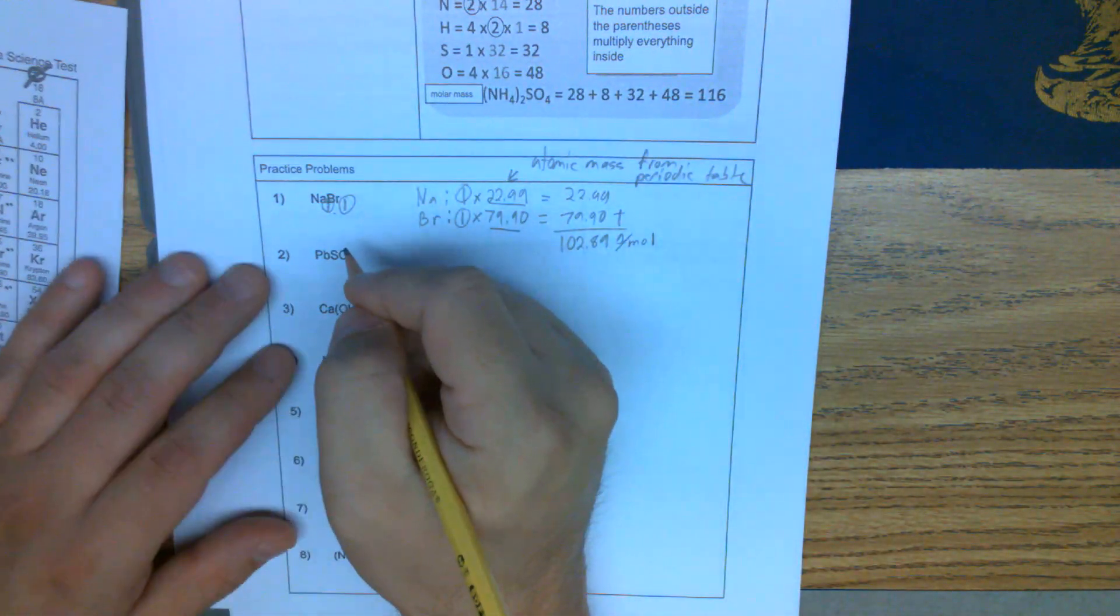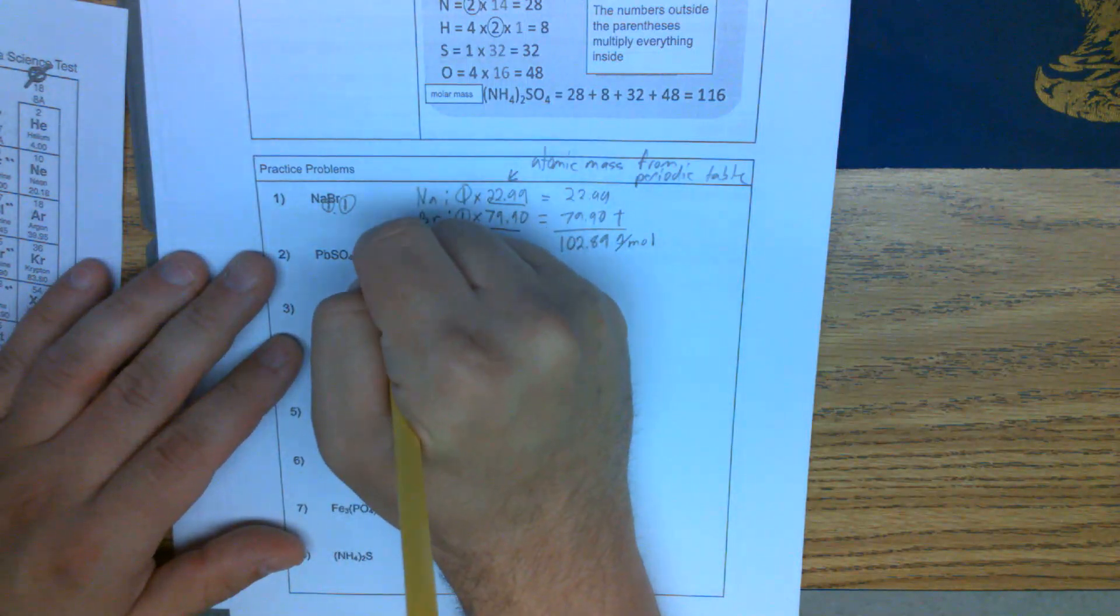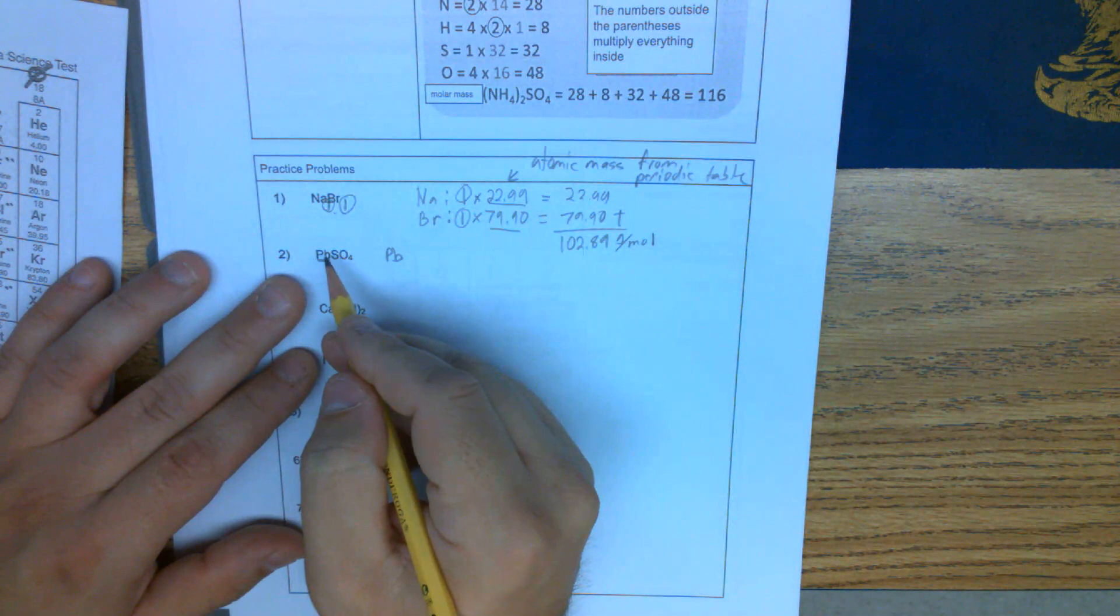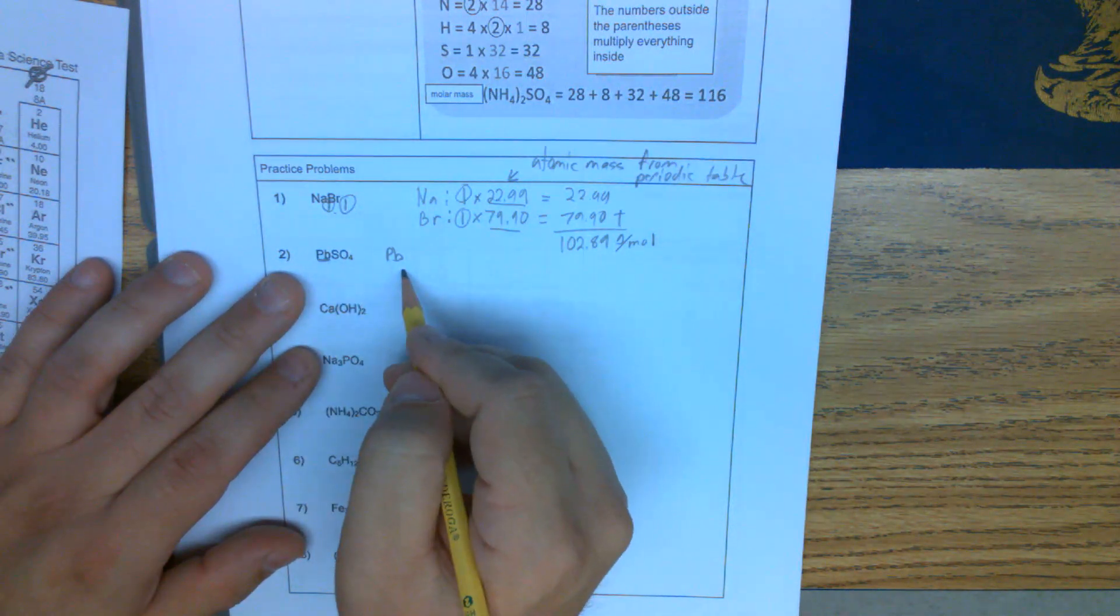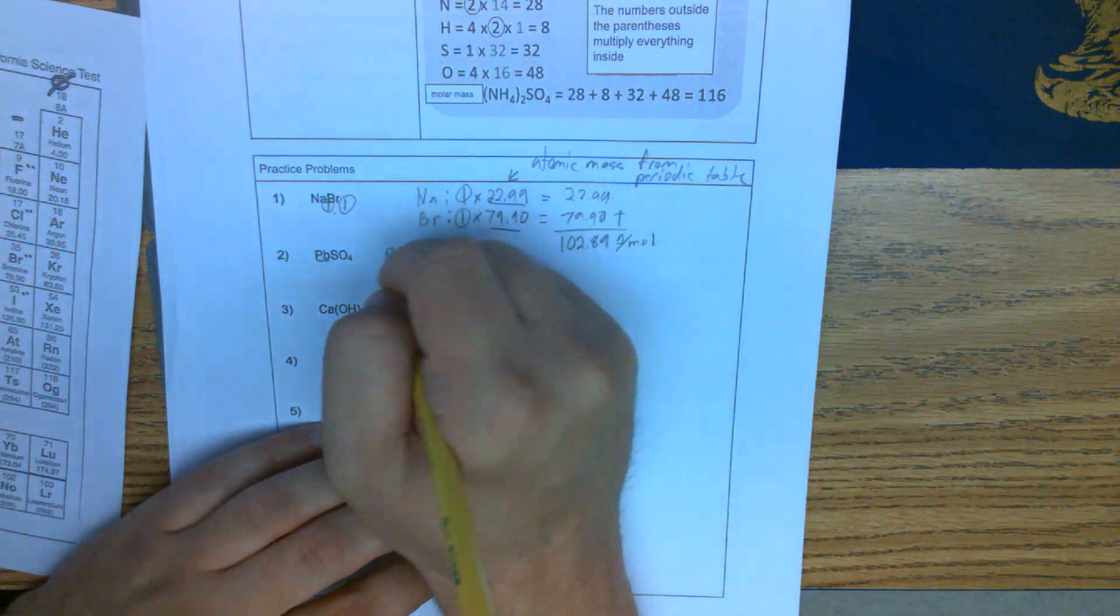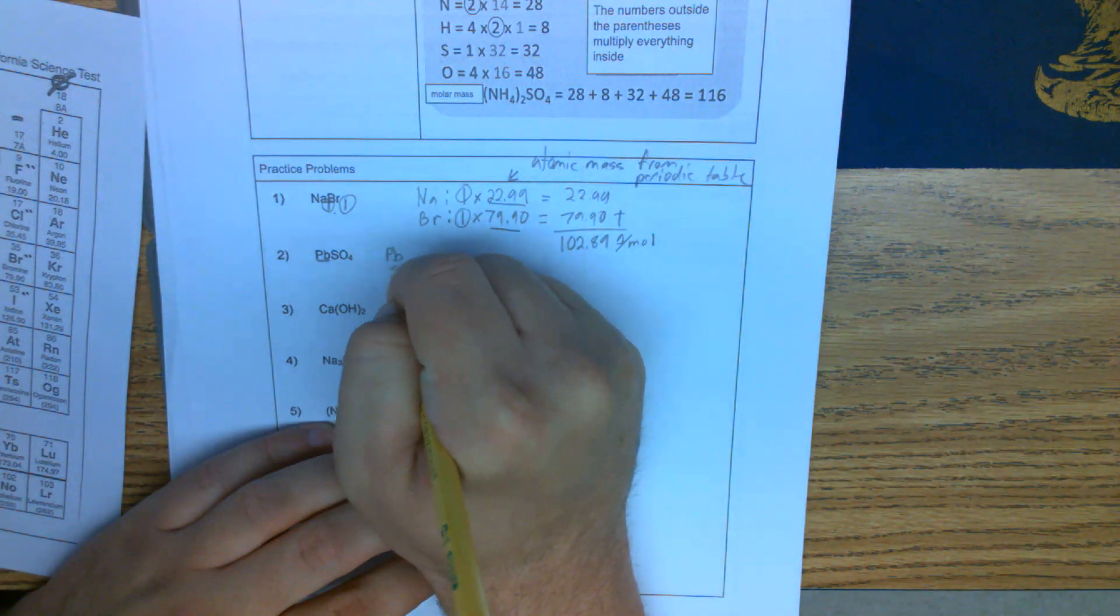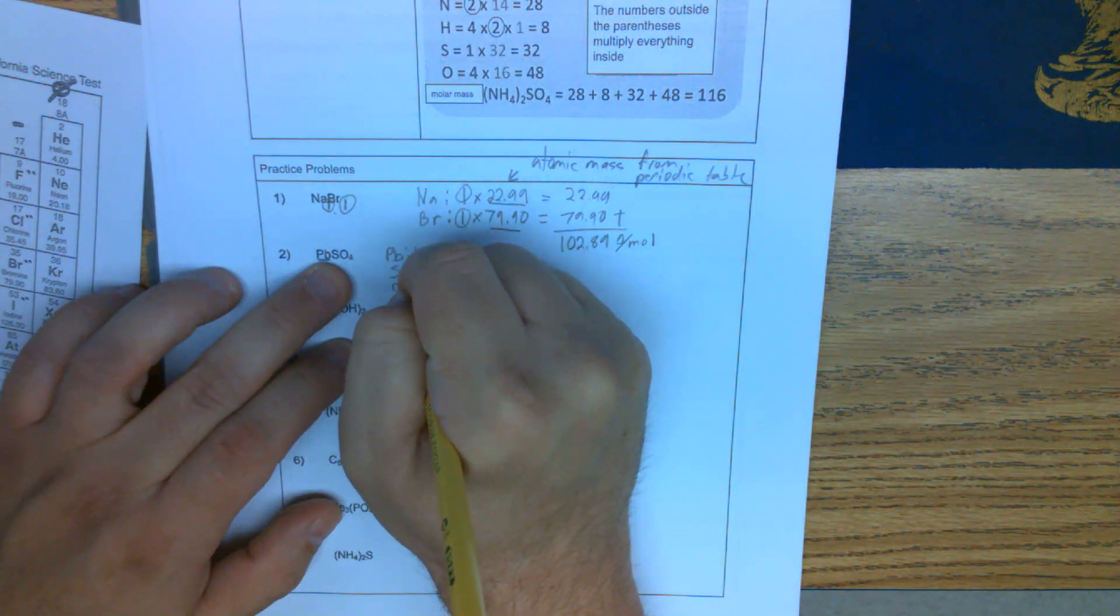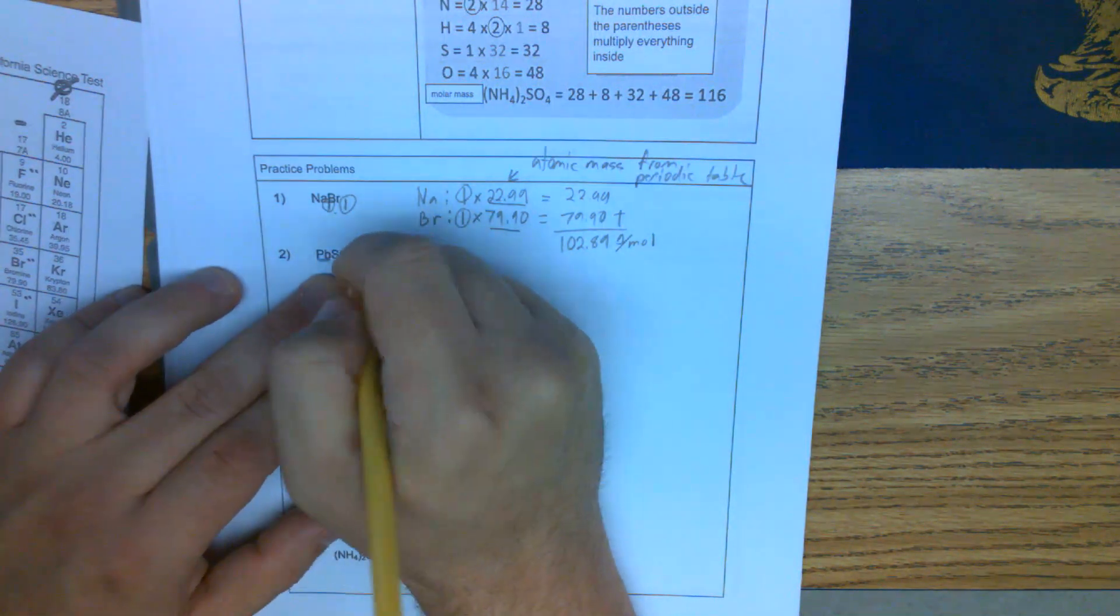Let's look at the second one here. We have PbSO4. So Pb—again, this is together because it's two letters, uppercase and lowercase. This lets you know they're together. S and O. So we have one Pb, one S, and four O's.